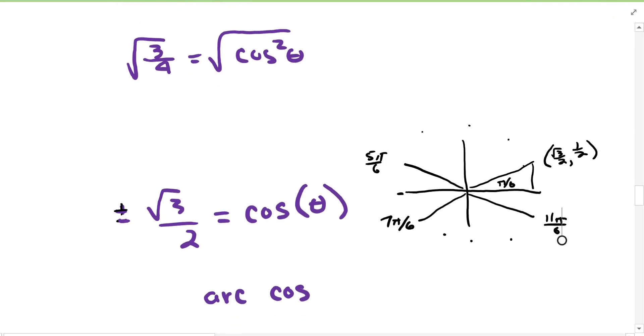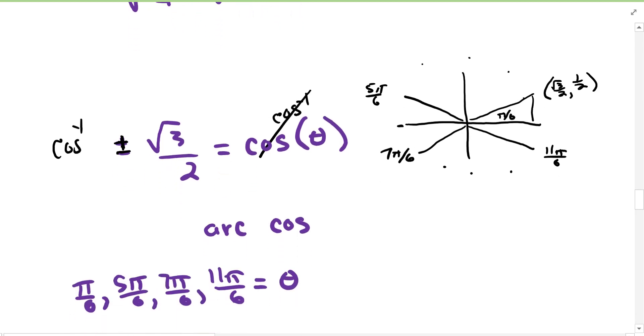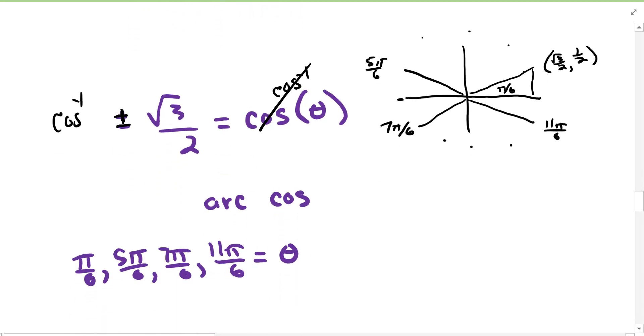This says we need to know both the positive and the negative versions. So when we take the arc sine of both sides, that cancels. What we are left with are these four: pi six, five pi six, seven pi six, eleven pi six. Remember, pi six and eleven pi six are the positive versions when cosine is positive and cosine is negative at the five pi six and at the seven pi six.